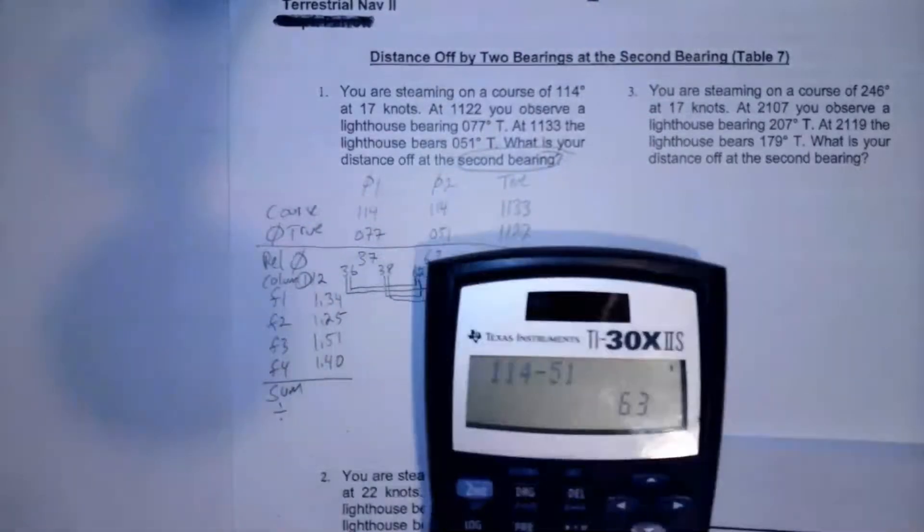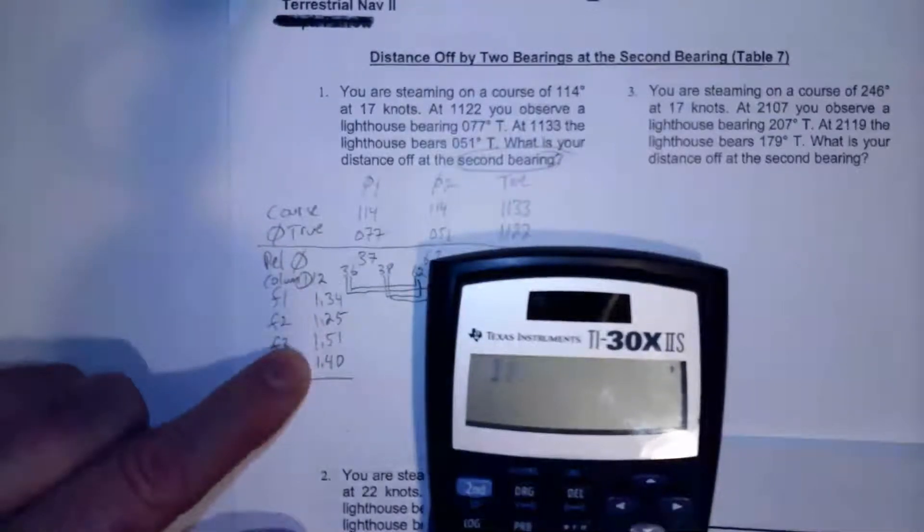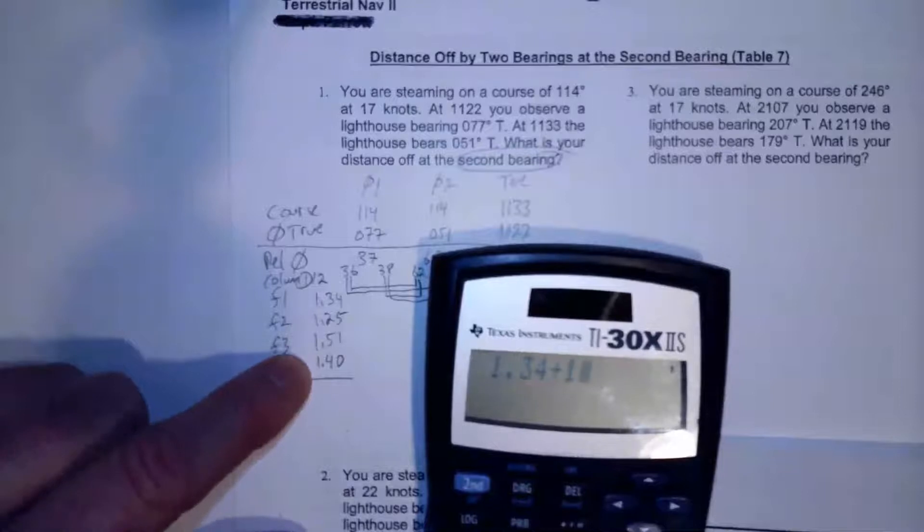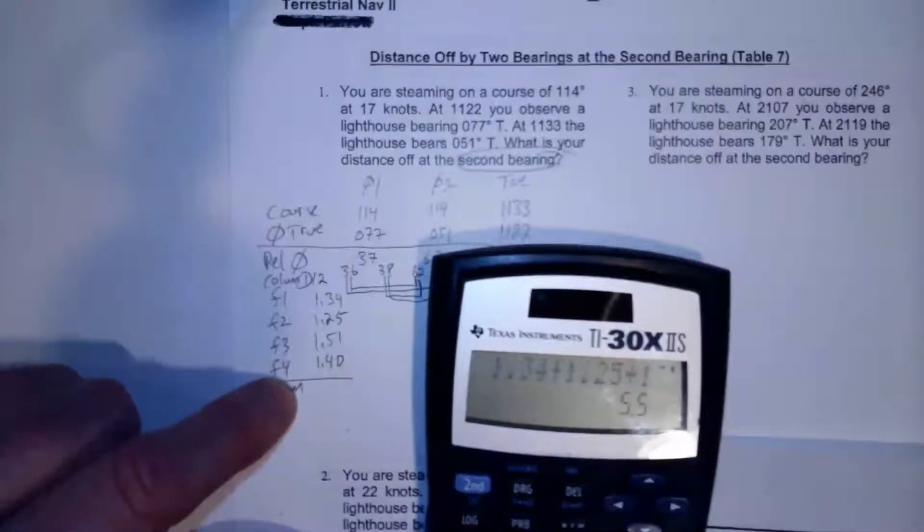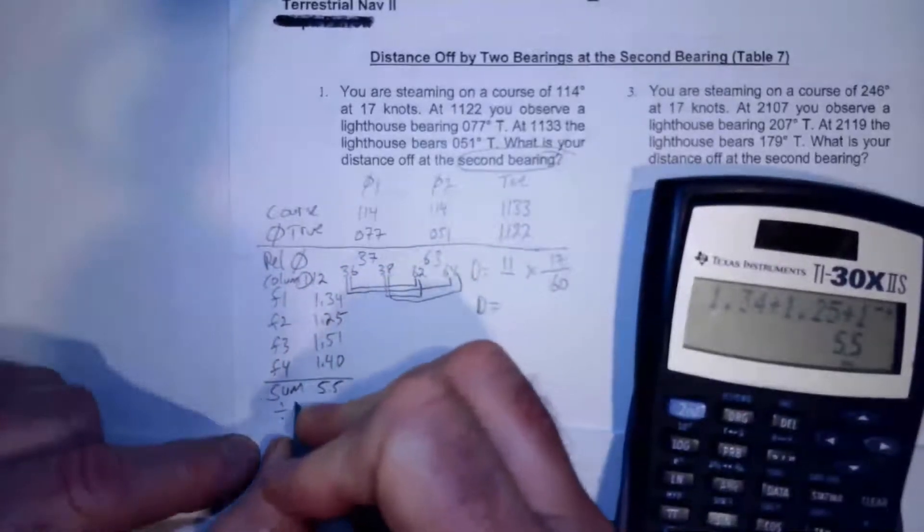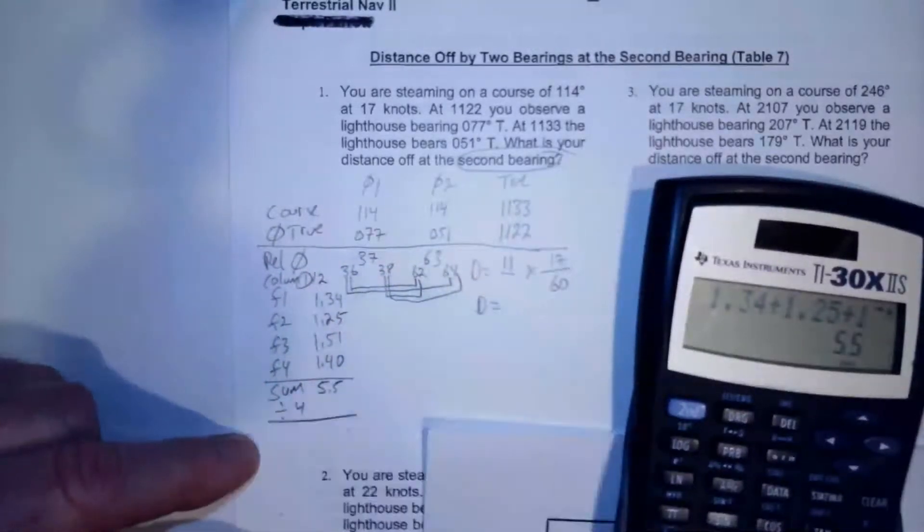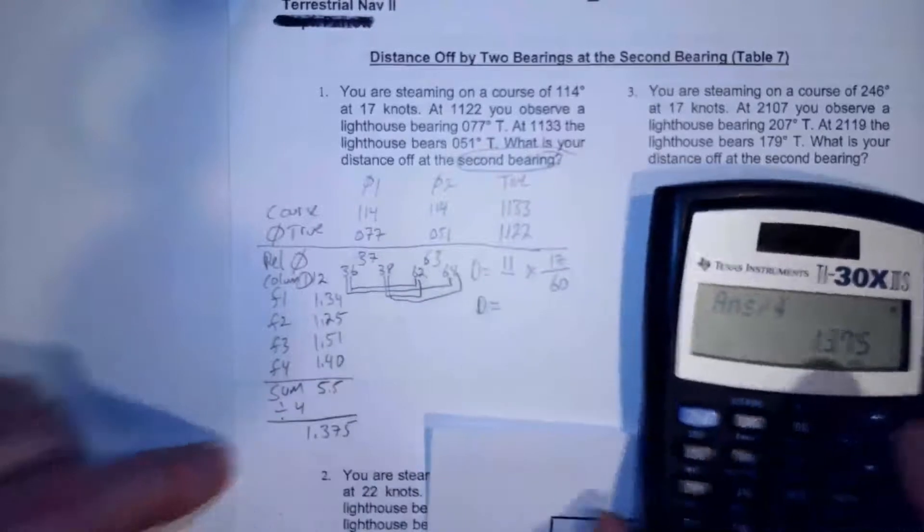Now I'm going to do a quadruple interpolation just by adding them up and dividing by four. Because there's four factors, I'll divide by four. So 1.34 plus 1.25 plus 1.51 plus 1.40 equals 5.5, so that's the sum, and we'll divide by four. Divide by four, 1.375. So that's the ratio.